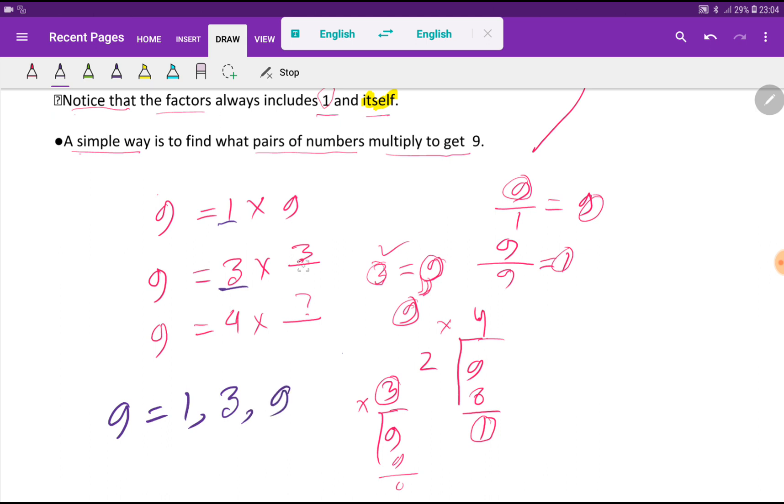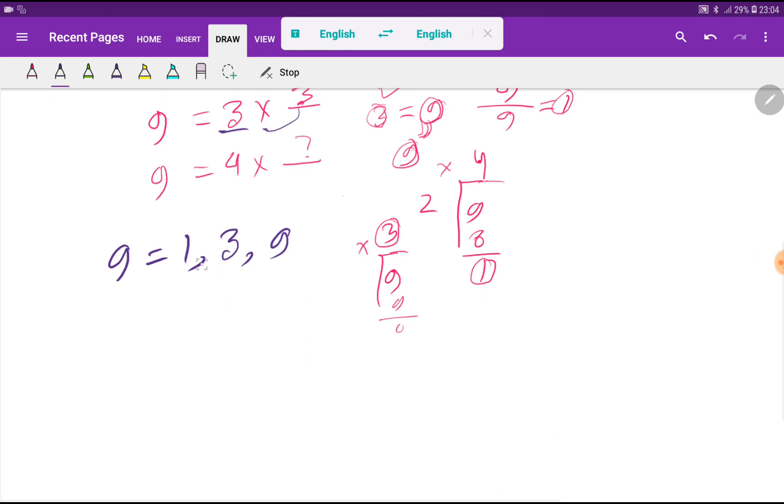The negative factors of 9 are like this: -1, -3, -9. These are the negative factors. So 9 has totally 6 factors: plus or minus 1, plus or minus 3, and plus or minus 9.